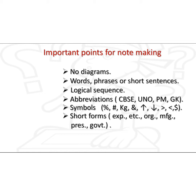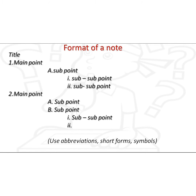You can use short forms — for example, 'exceptional' can be written as 'EXP', or other short forms of your own. You should not use any diagrams. You can use abbreviations; for example, Central Bureau of Investigation can be written as CBI. The format presented in the paragraph must be written in a logical sequence.